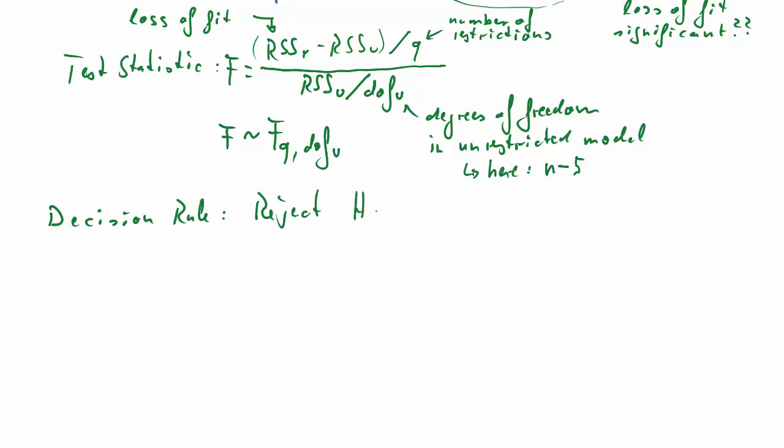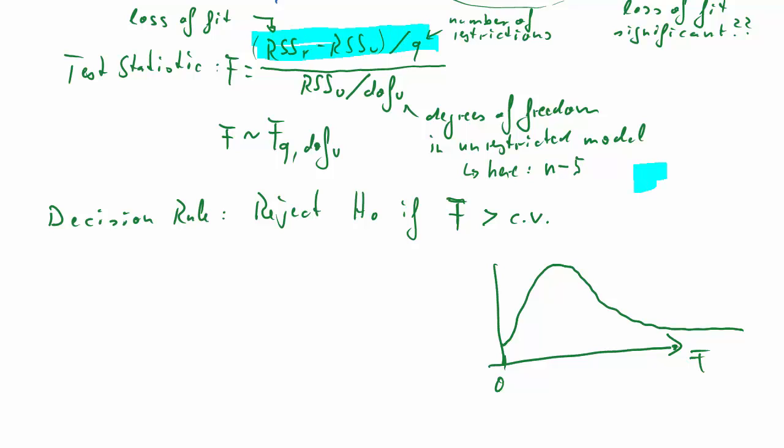Now, at this stage, we need a decision rule. We want to reject H0 if F is larger than the critical value. Now, the core here is that loss of fit. The larger the loss of fit, RSSR minus RSSU, the more costly was the imposition of the restrictions. And therefore, larger F-statistics will make us more likely to reject the null hypothesis of the validity of the restrictions. Remember, RSSR minus RSSU is always going to be positive. And therefore, the F-distribution actually only lives on the positive line. Negative values are not possible. If you get them, you know you've made a mistake.